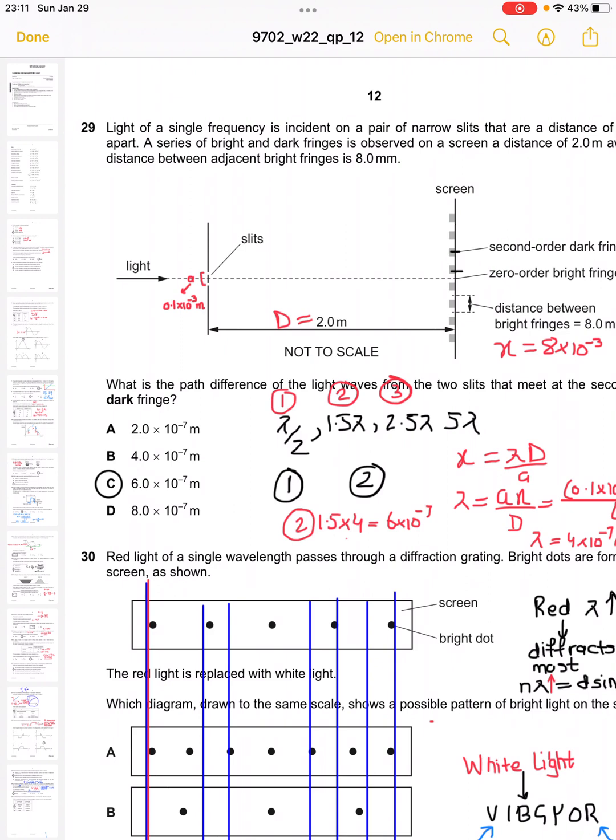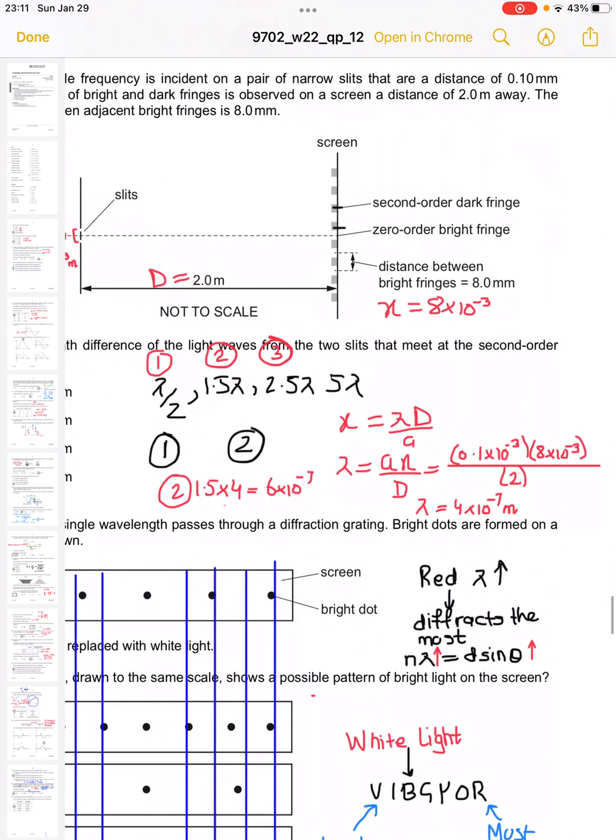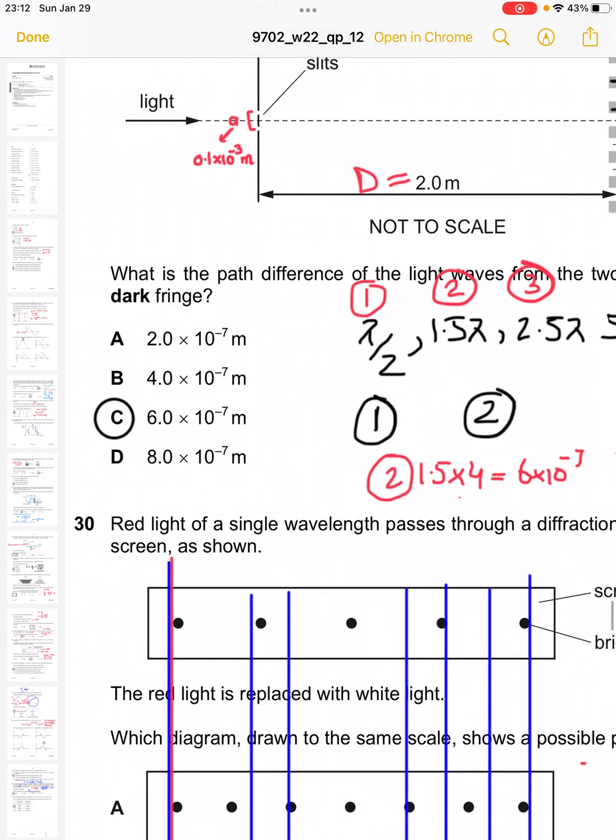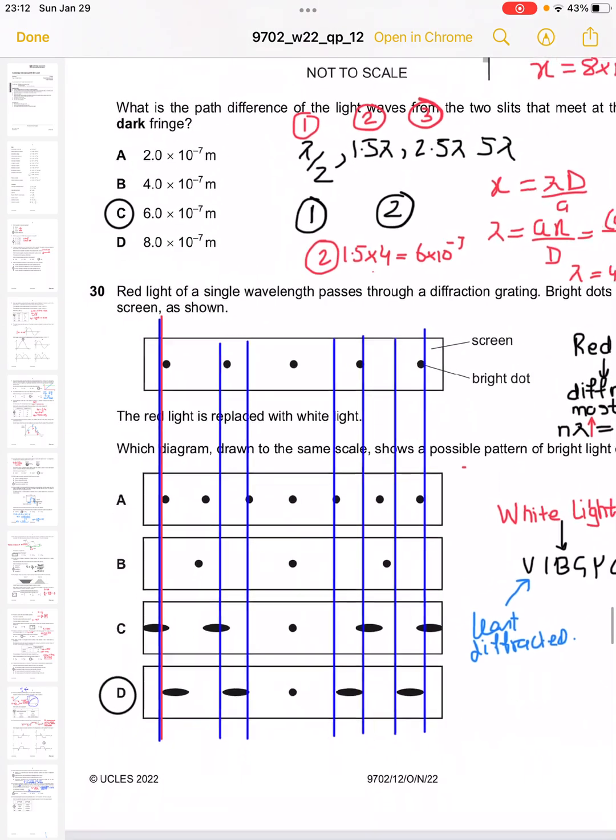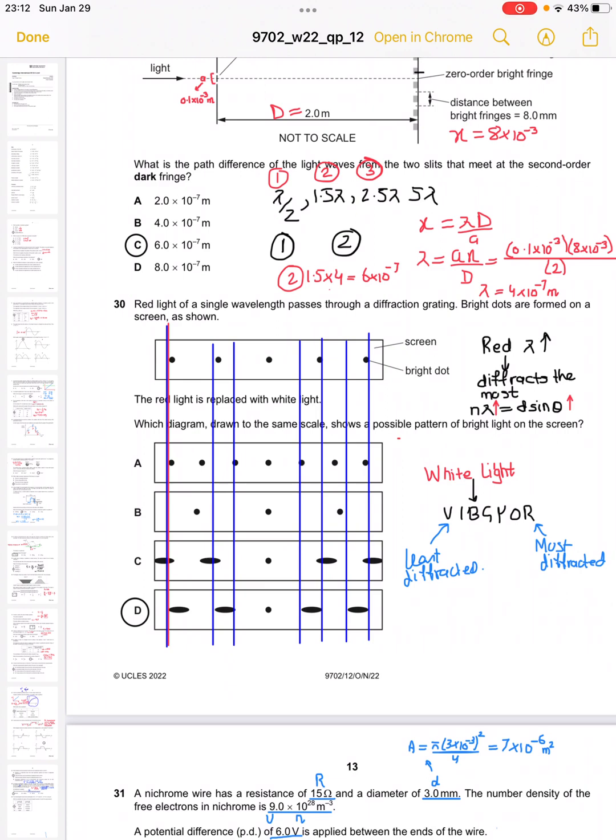In order to find lambda, we need to apply the formula x equals lambda d over a. Lambda becomes ax over d, and evaluating this gives us lambda as 4 into 10 raised to the power negative 7. Just multiply 4 by 1.5, which gives us C - 6 into 10 raised to the power negative 7 as the correct answer.